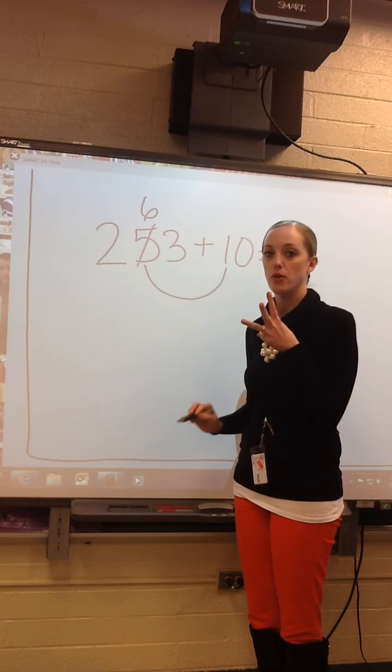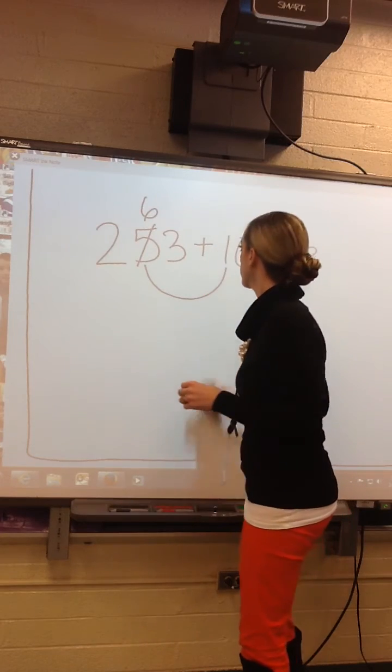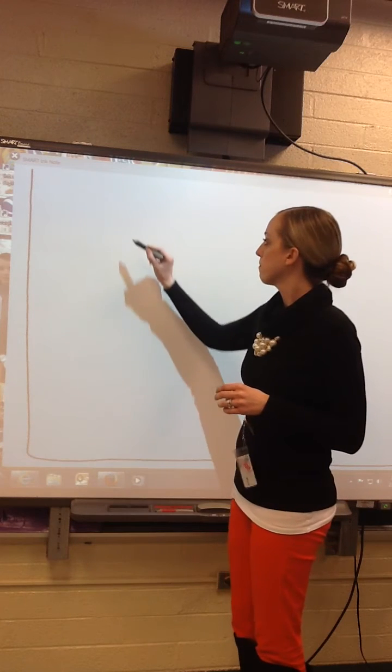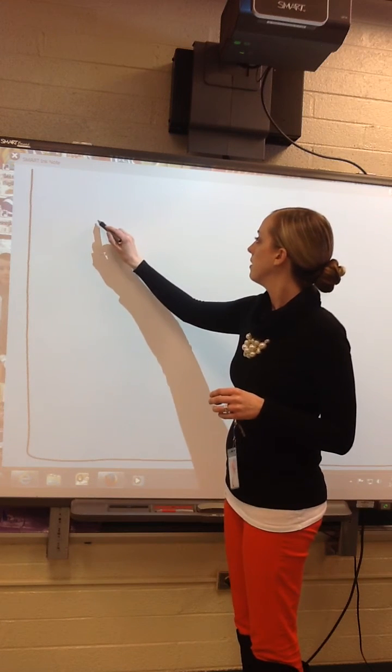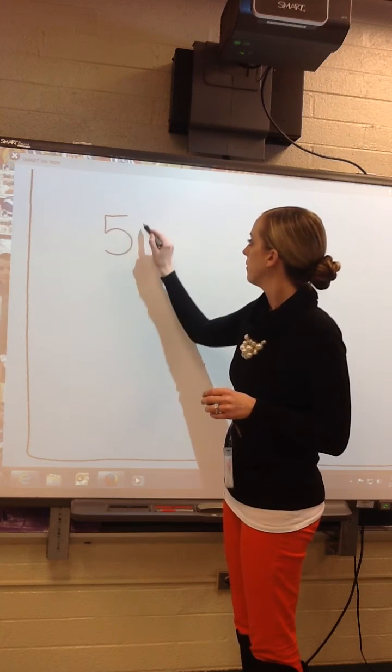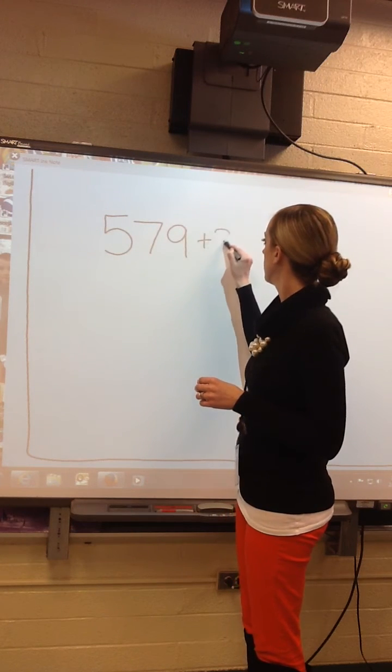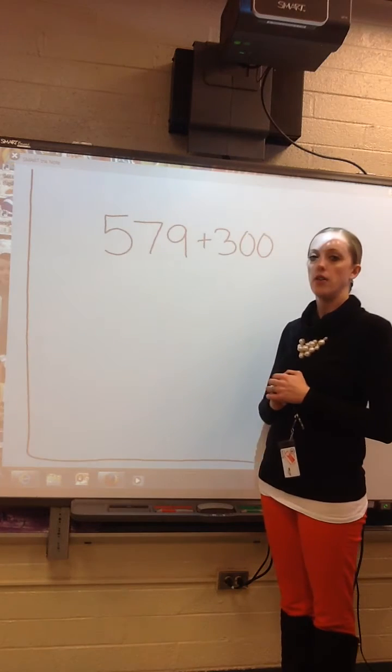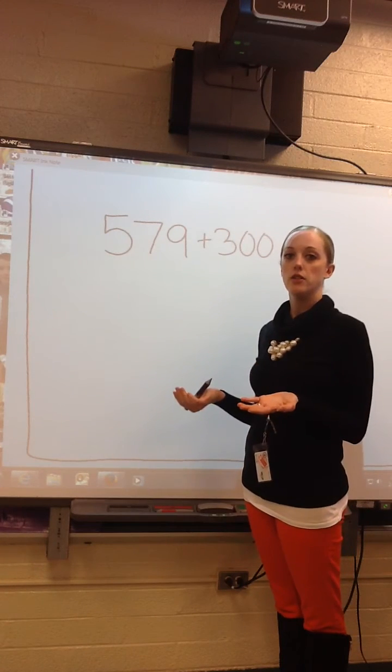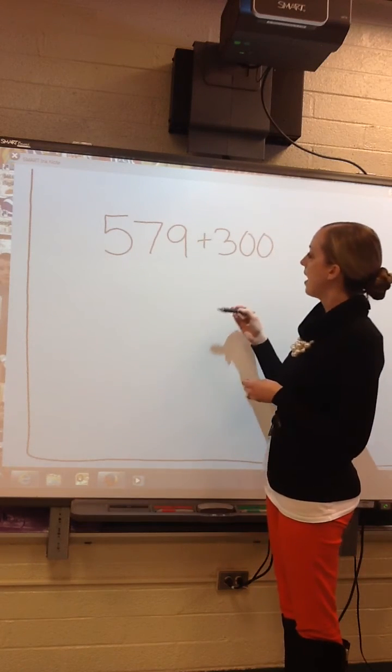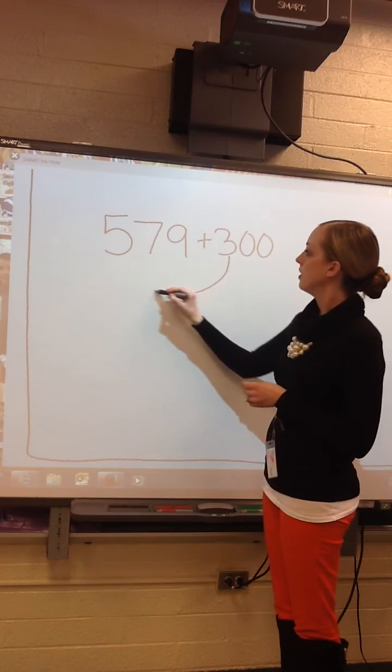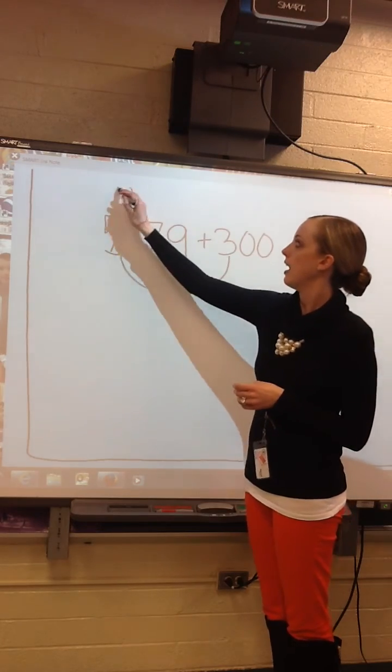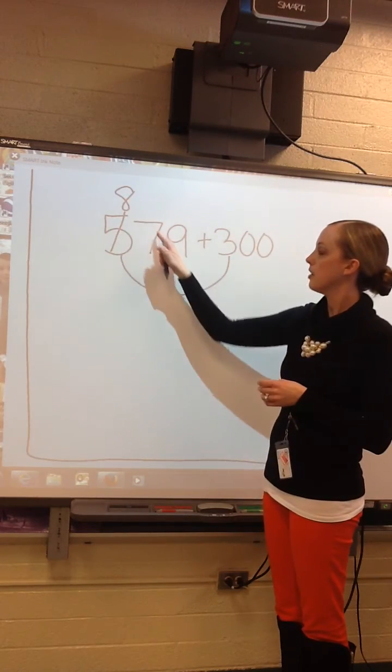Now we're going to do strategy number 3. If I had 579 plus 300, again, am I adding hundreds, tens, or ones? In this case, I'm adding hundreds. So it would be 300 plus 500. 300 plus 500 is 800. The sum is 879.